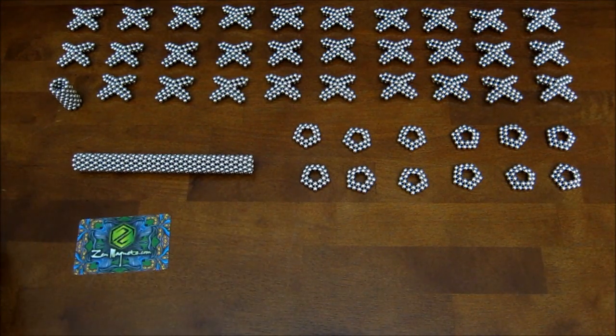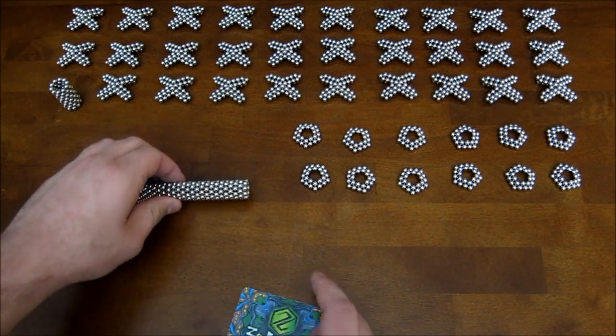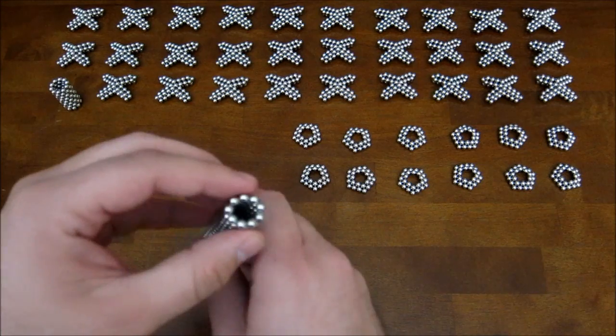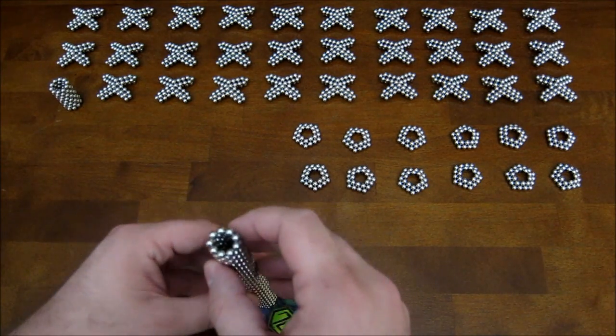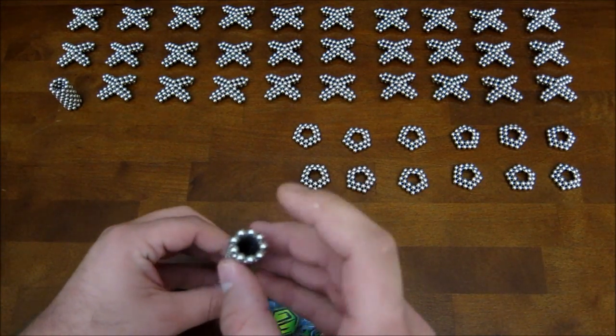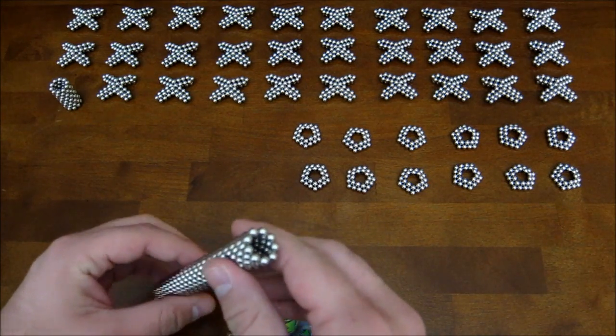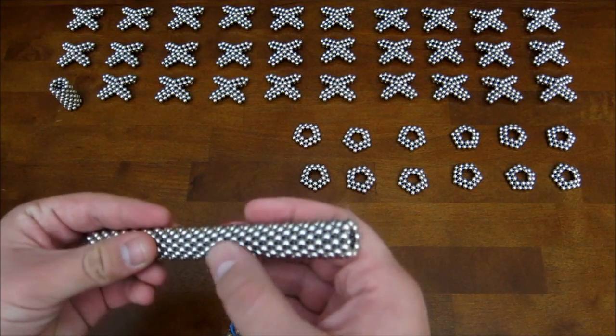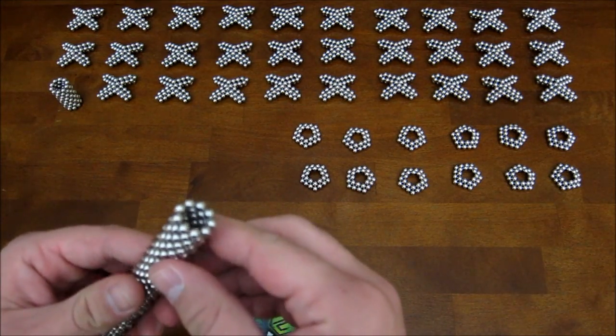So, this is how you build the smaller version. You need 40 stacked rings, and the number of magnets in the ring needs to be a multiple of 3. Here I have 9 magnets per ring, but you could go up to 12 or maybe 15, or even down to 6 if you wanted to.